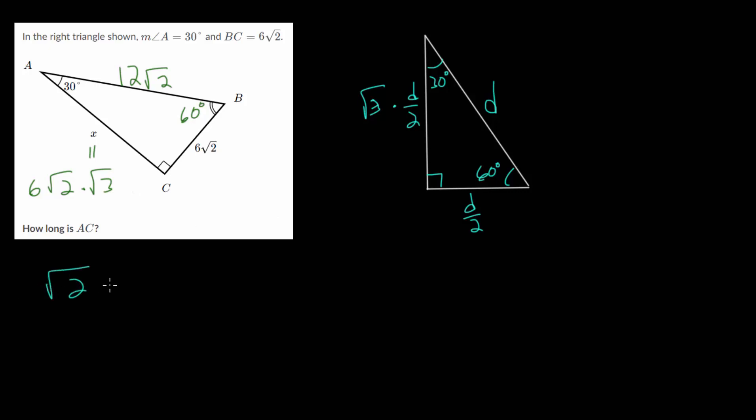And when we have two square roots multiplied together, we can combine them into one square root of their product. So in other words, this is one big square root of 2 times 3 and 2 times 3 is 6. So we can simplify this to just be 6 multiplied by the square root of 6. So this is our missing x value.